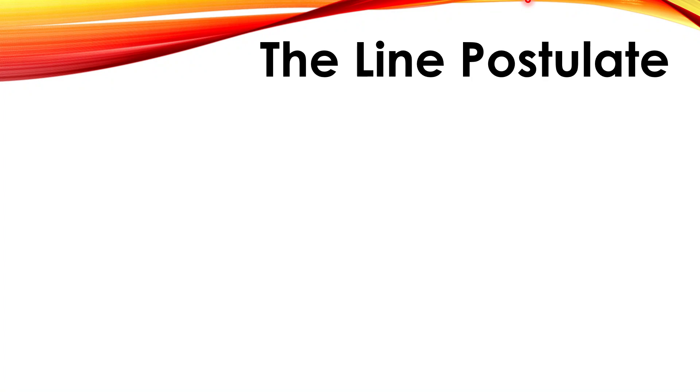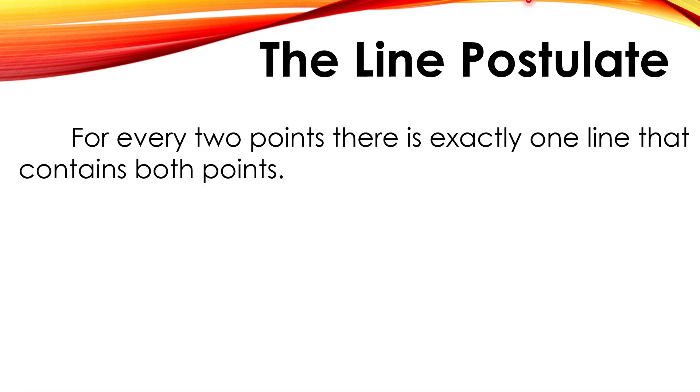First, we have the line postulate. For every two points, there is exactly one line that contains both points. So we have here point A and point B contains one line. Point A and point R are a collinear point.